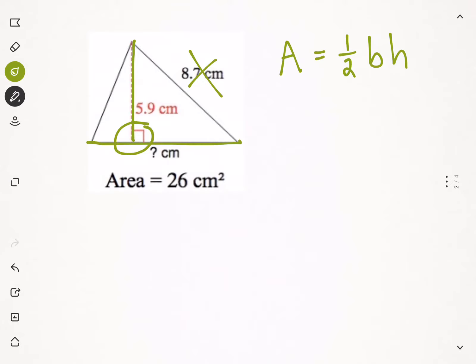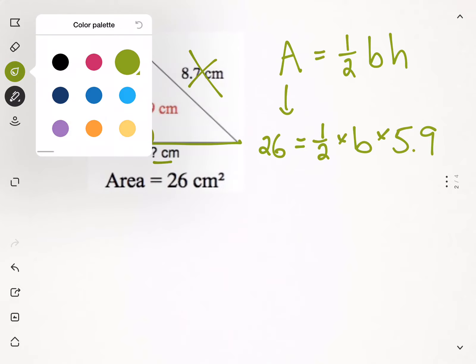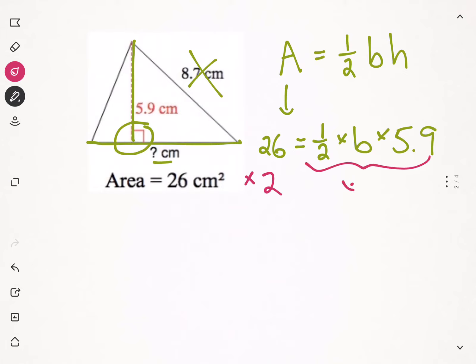So, we're told that the area is 26, so I'm going to substitute in for A, 26 equals half times, we don't know the base, times the height is 5.9. Now, if I multiply both sides of my equation by 2, times 2, times 2, times 2, and we do this because we're trying to get rid of that half.